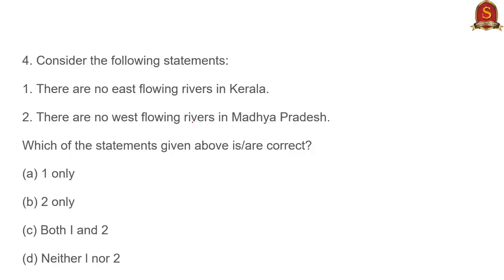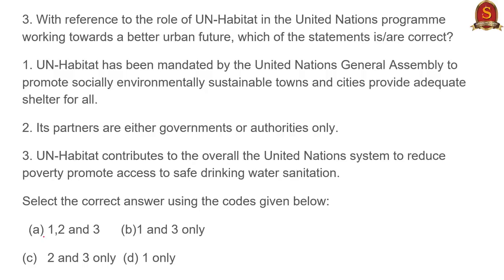Question three uses the same pattern: 'there are no east-flowing rivers in Kerala' and 'there are no west-flowing rivers in Madhya Pradesh.' When you know India has innumerable river systems, saying there are absolutely no east-flowing rivers is logically wrong. Similarly, the Tapi flows through Madhya Pradesh. Both statements are wrong due to complete negation, so the answer is D.